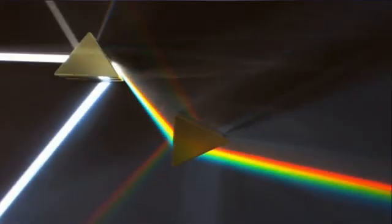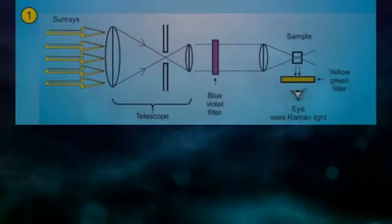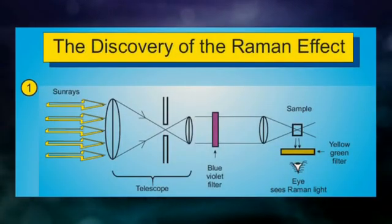These initial experiments opened up a new field of research in Calcutta. Further work on the scattering of light led to the discovery of Raman effect in 1928.